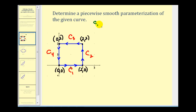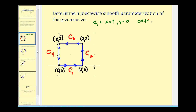For curve one, we go from the point (0, 0) to the point (2, 0). If we let x equal t and y equal zero, and then define t on the closed interval from zero to two, we would take the path of curve one.